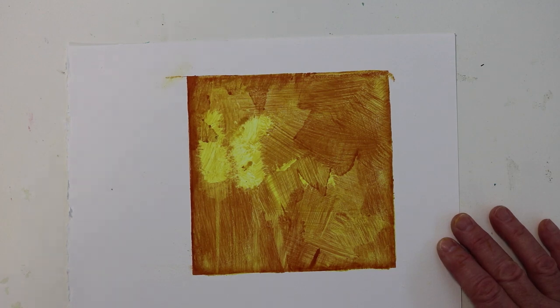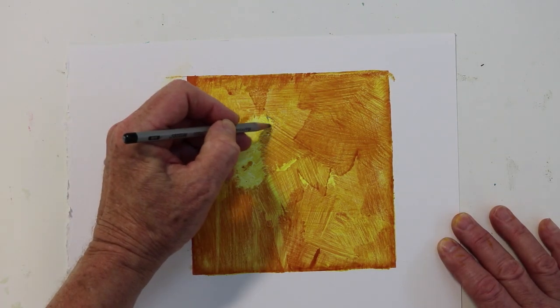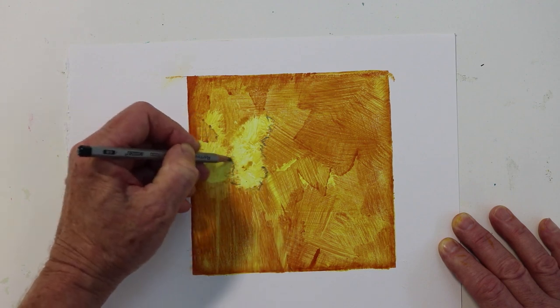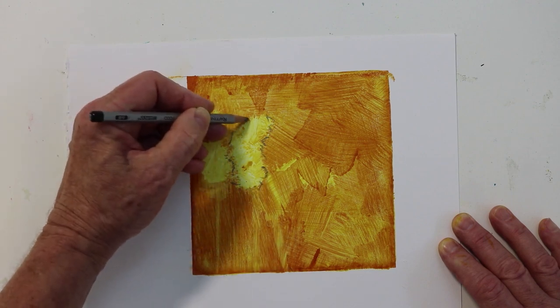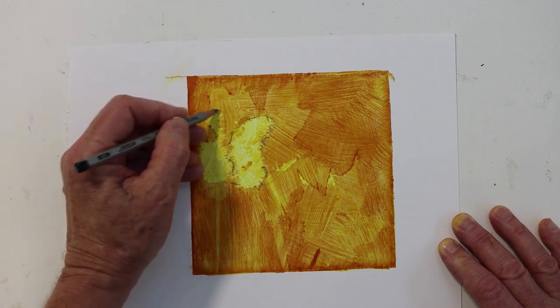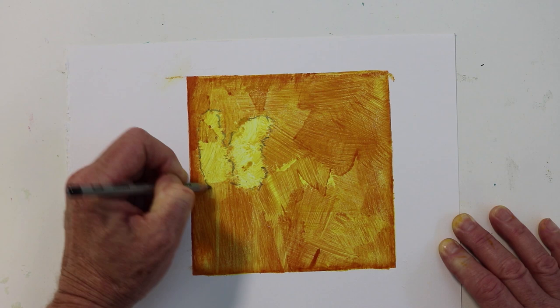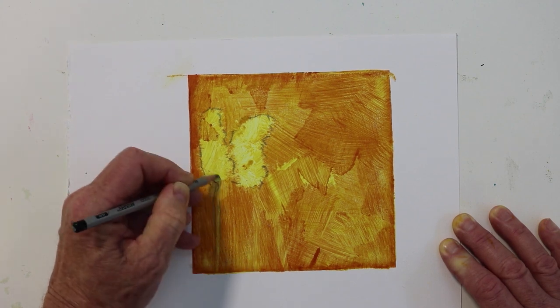I take an 8B pencil and I roughly outline the shapes of the blooms. I want these blooms to be the brightest area of the monoprint, so I wanted them to stand out.